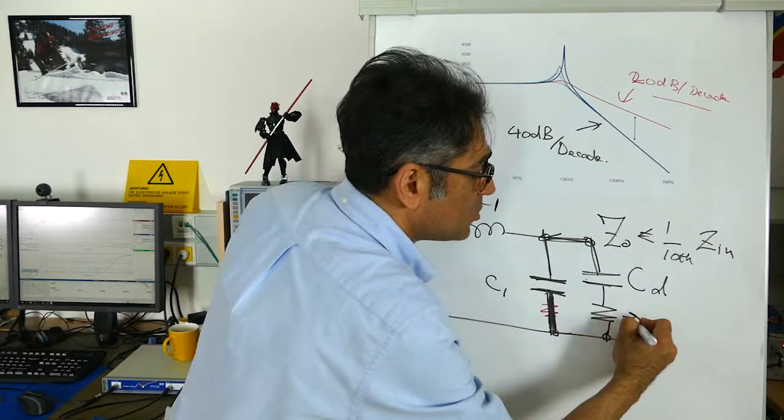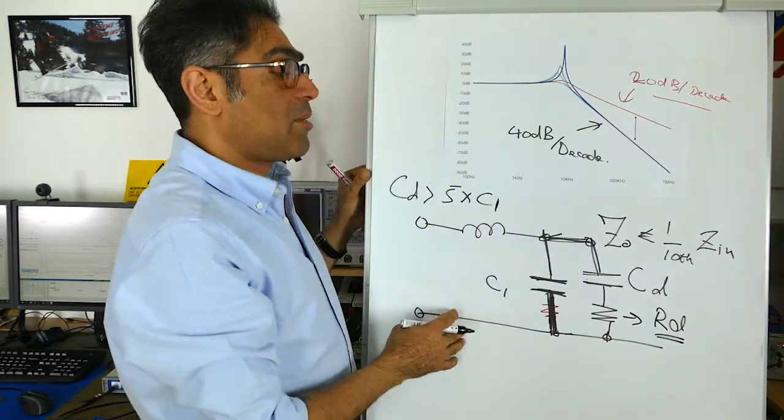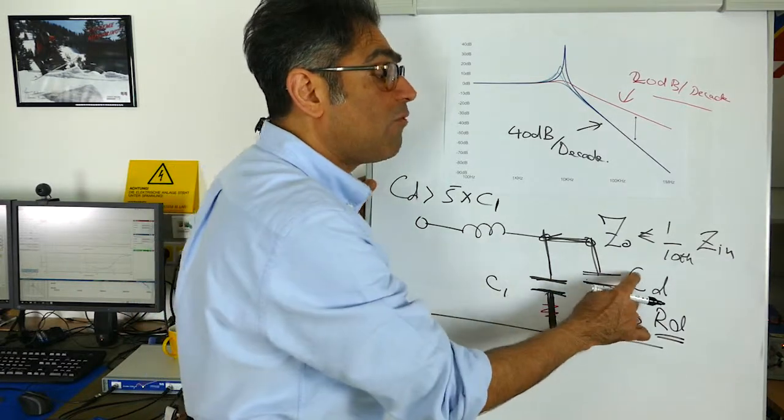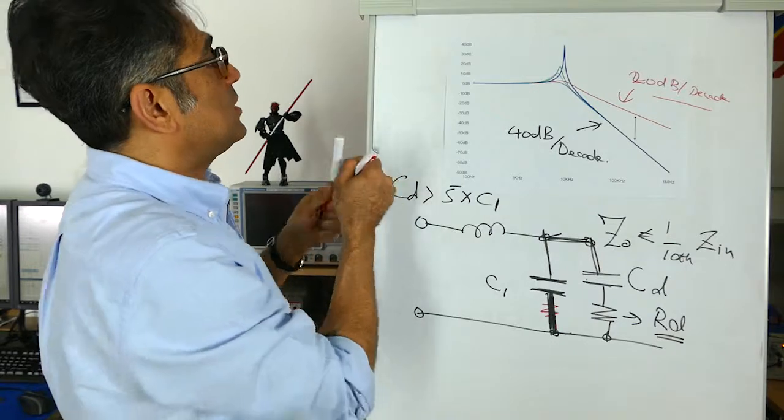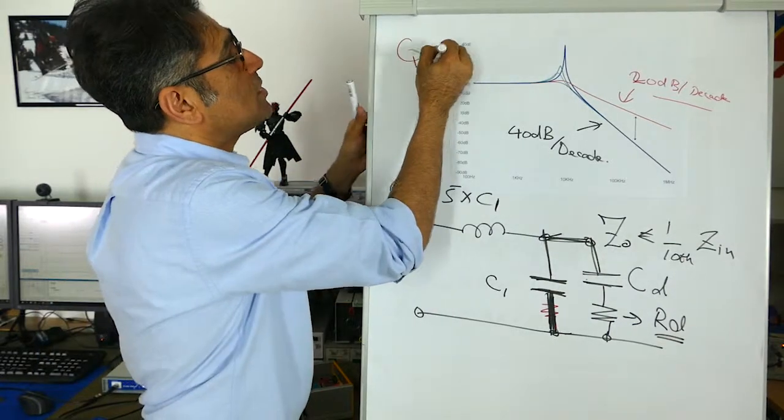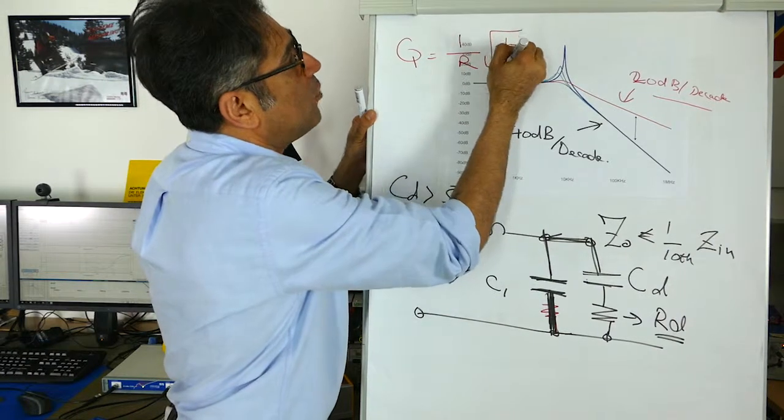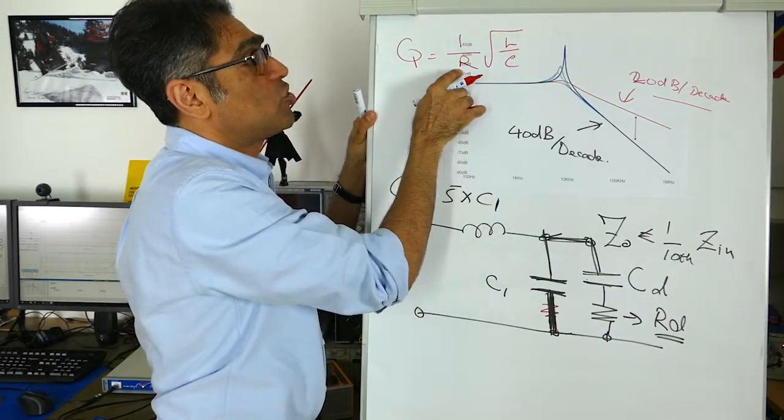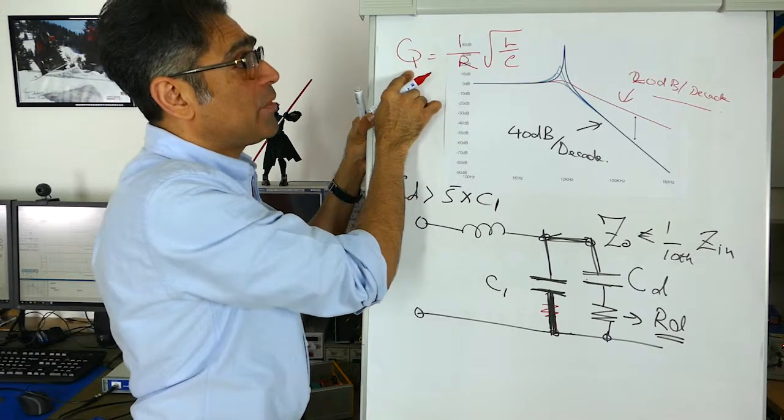The resistance let's call this Rd could be the ESR of the capacitor. If you wanted a Q of one we know the equation for it, we know that Q is equal to one over R times the square root of L over C so you can select R so that it gives you a Q of one.